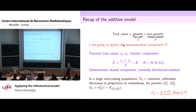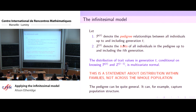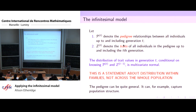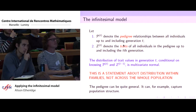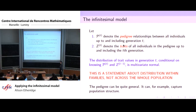What the infinitesimal model is telling us is that if we know the pedigree relationships between all the individuals up to and including the current generation T, and even if we condition on the trait values up until the parental generation, the distribution of the trait values in the current generation — conditional on the pedigree and on these trait values — is a multivariate normal. We cannot emphasize enough: this is a statement about distribution within families. It's not saying that the distribution across the whole population is normal.